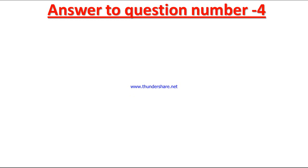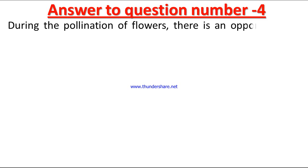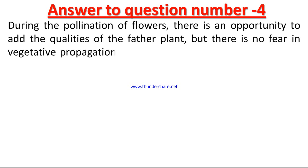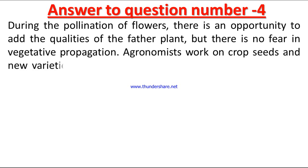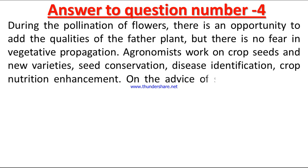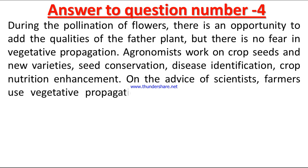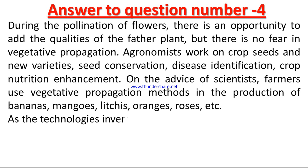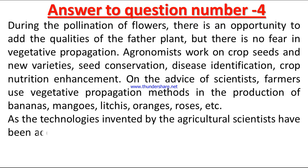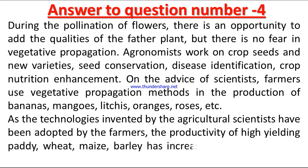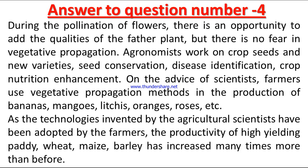Answer to question number four: During the pollination of flowers, there is an opportunity to add the qualities of the father plant, but there is no such concern in vegetative propagation. Agronomists work on crop varieties, new variety development, and conservation. On the advice of scientists, farmers use vegetative propagation methods in the production of bananas, mangoes, litchis, oranges, roses, etc. As technologies invented by agricultural scientists have been adopted by farmers, the productivity of high-yielding paddy, maize, and barley has increased many times.